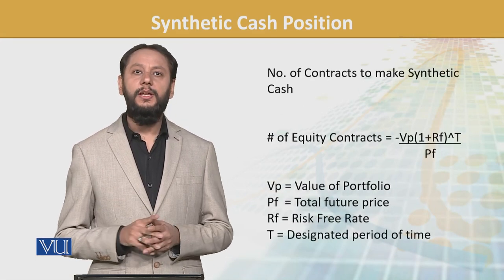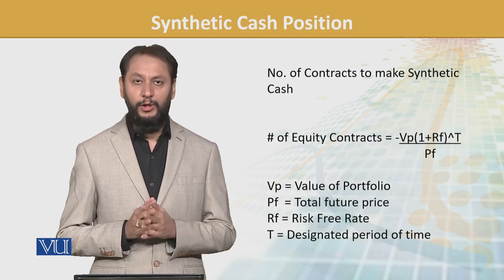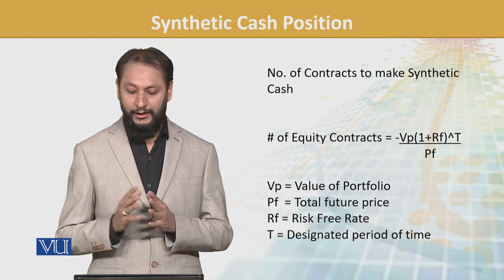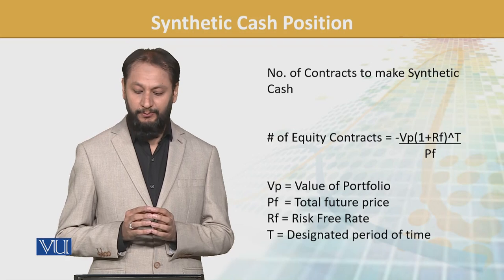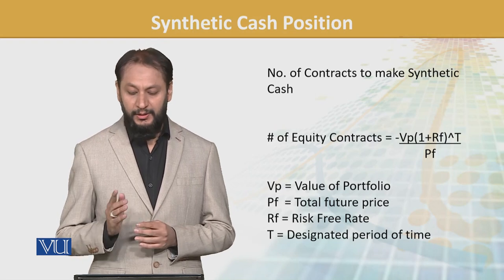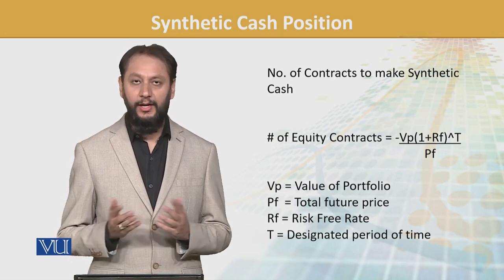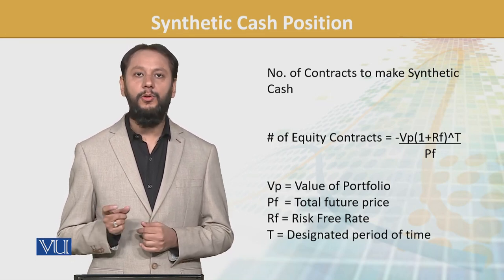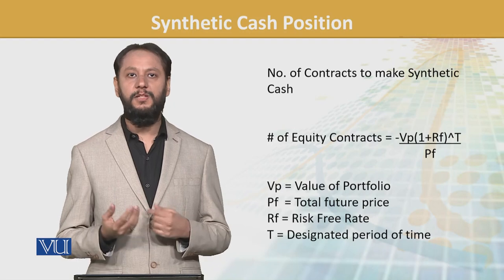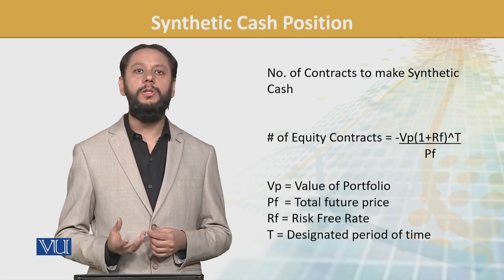The key question here is: what is the number of contracts we need to convert equity to cash? Number of equity contracts is determined through the formula: Value × (1 + rf)^t divided by Pf. Here, Value is our portfolio value, Pf is the futures price currently available, rf is the risk-free rate, and t is the time duration of the period we are considering.